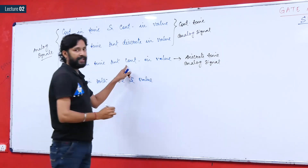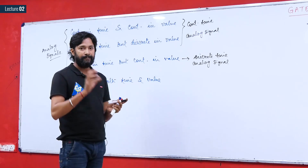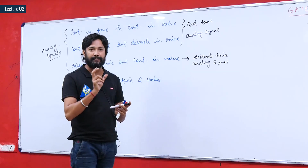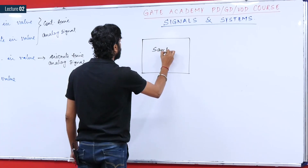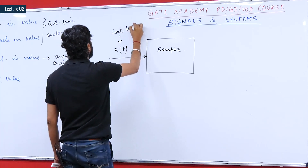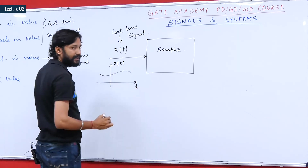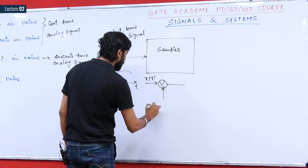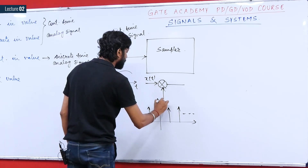A discrete-time analog signal is obtained by performing sampling on a continuous-time signal. In sampling, you take the values of the continuous-time signal x(t) at integer multiples of the sampling interval T_s. The signal after sampling will not be defined at every instant of time, but only at integer multiples of T_s. Mathematically, sampling is performed by multiplying x(t) with an impulse train — a series of regular impulses occurring at intervals from minus infinity to plus infinity.